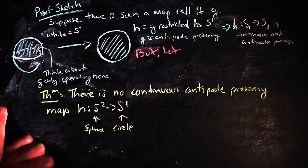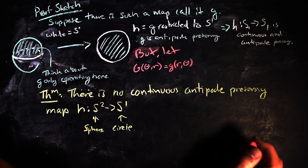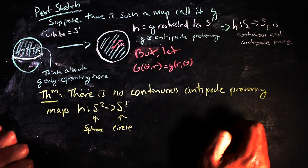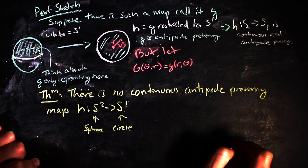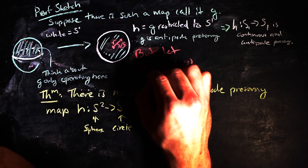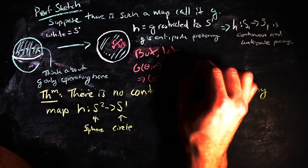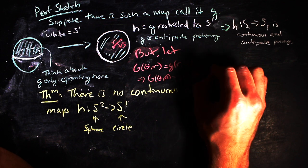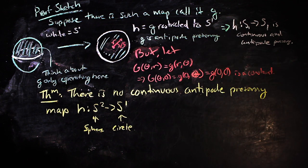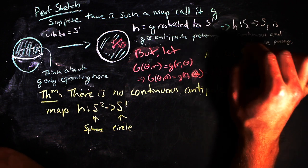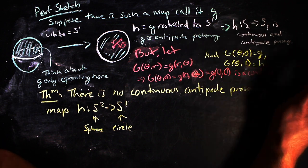But we actually do have a homotopy. And we can define it in the following way. Let big G of theta and r be equal to little g of r and theta. Notice that when r is equal to 0, we're evaluating at the center of the disk for any theta. So we get big G of theta and 0 is equal to little g of 0 and theta which is equal to little g of 0 and 0 which is just a constant.